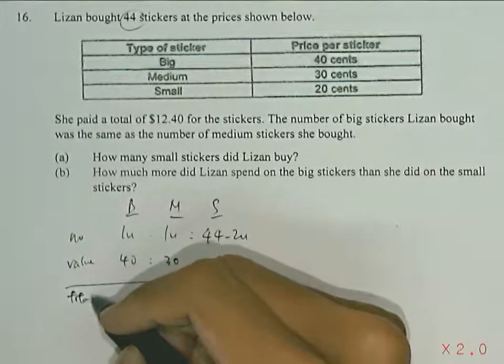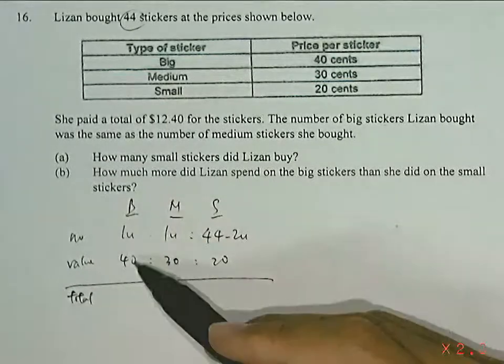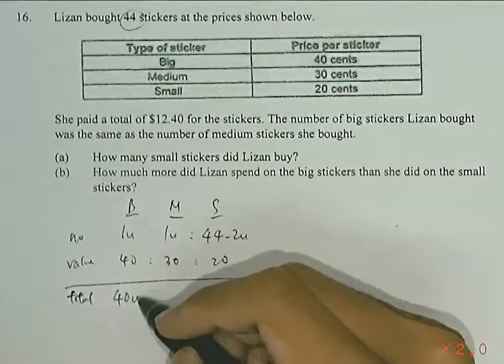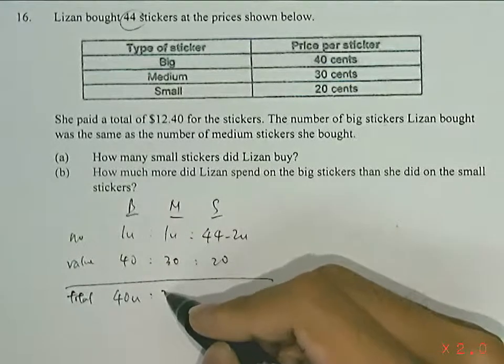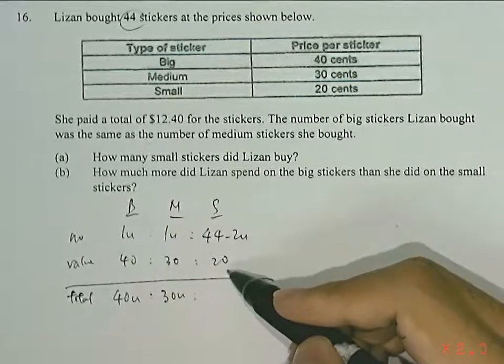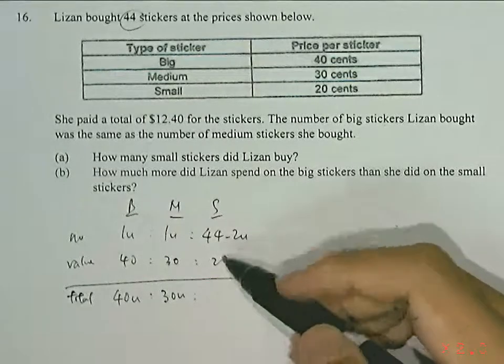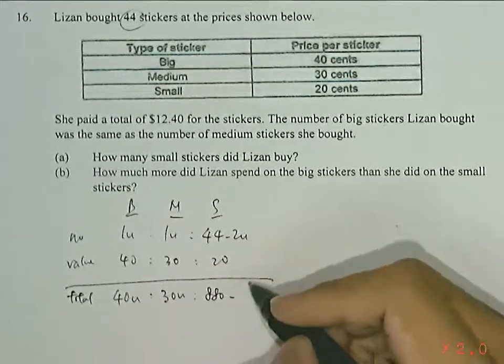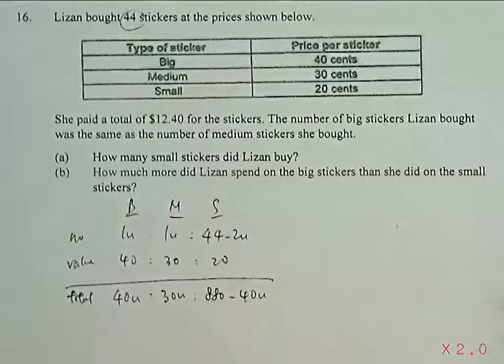So if we then find out the total value of all the stickers, 1 unit times 40, we have 40 units here. Medium stickers, we have 30 times 1 unit, which is 30 units. And small stickers multiplying by 20: 44 times 20 we have 880, minus 2 times 20, which is minus 40 units.